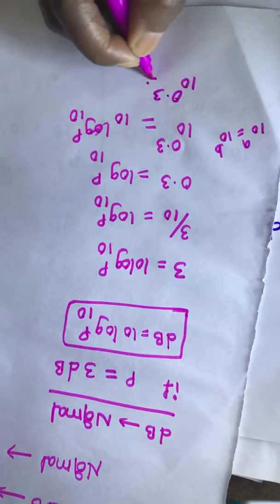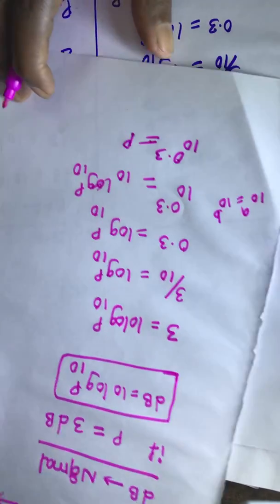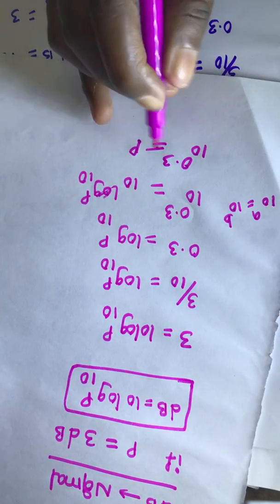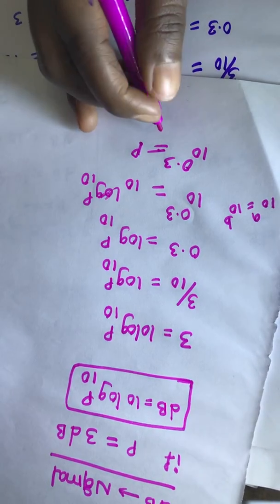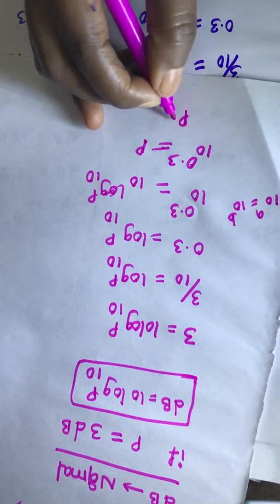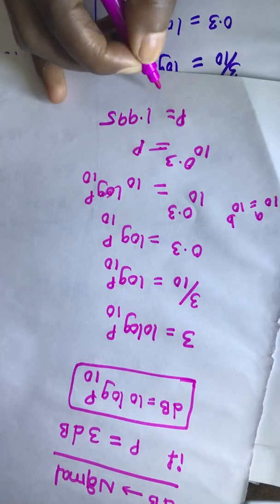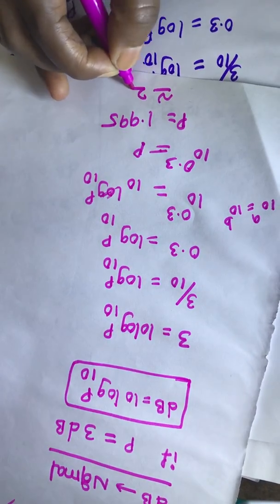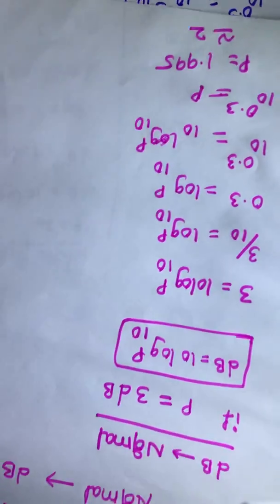So 10 power 3 is equal to P. We will calculate by using calculator, we will get P is equal to 1.995 which is nearly equal to 2. This is in normal power.